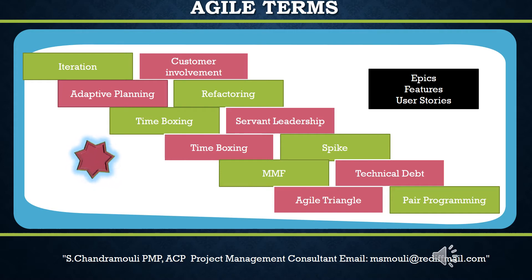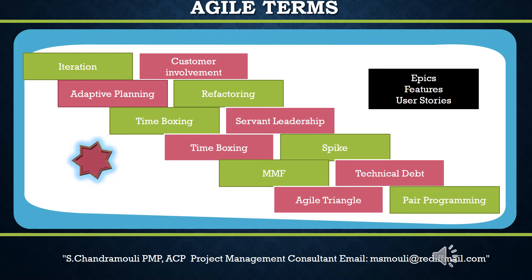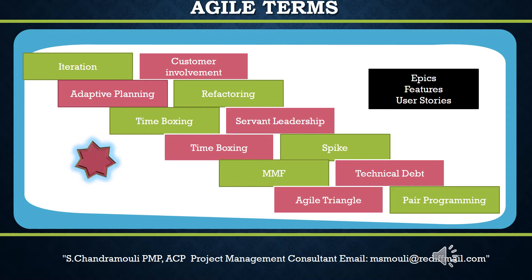Fifth, the agile triangle: in traditional projects, scope is fixed and time and cost are the driving factors. In agile projects, time and cost are fixed through time boxing, but scope is not fixed for the entire project in a single stretch. Scope is developed using just-in-time planning for the iteration. So the agile triangle is the inverse of the traditional project triangle, where time and cost are at the top and scope is derived from those at the lower side.